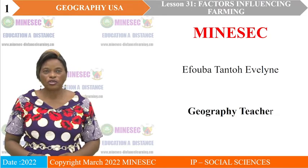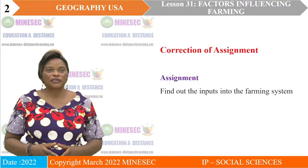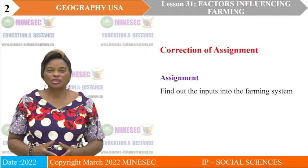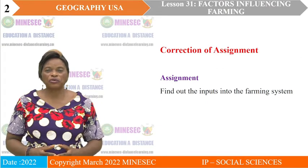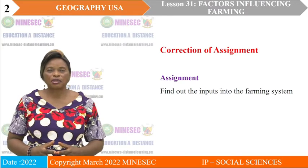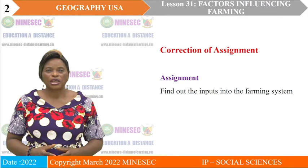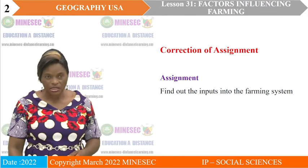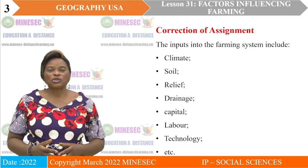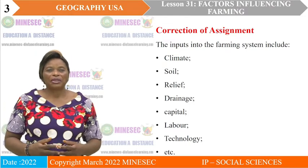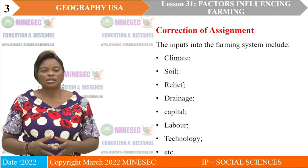Today we are going to have a geography lesson. Before we proceed, we are going to correct the assignment given during the previous lesson. You were asked to find out the inputs into the farming system. For the correction, the inputs into the farming system are many — some are physical, some are human.